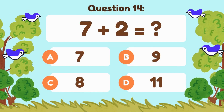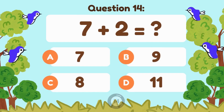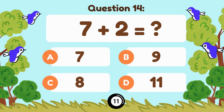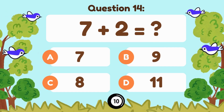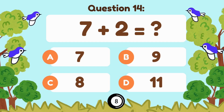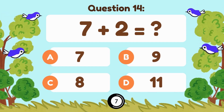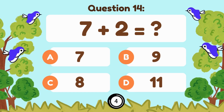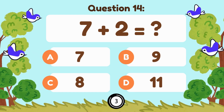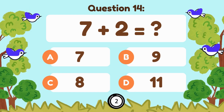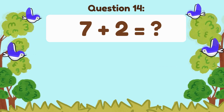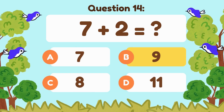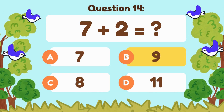7 plus 2 equals... 7 plus 2 is equal to 9.